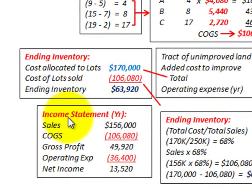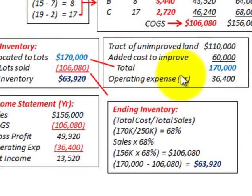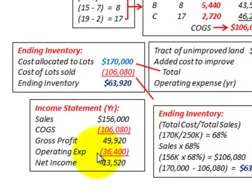Looking at the income statement: sales for the year were $156,000, less cost of goods sold of $106,080, gives gross profit of $49,920 — matching our earlier calculation. After deducting operating expenses of $36,400, we arrive at net income of $13,520.